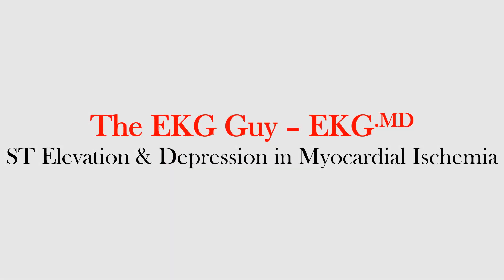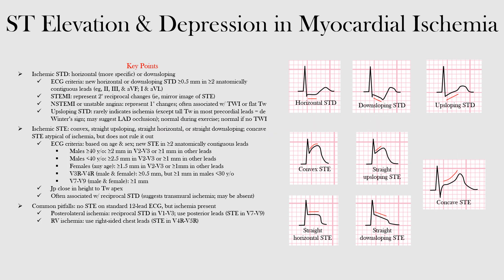In this lecture we will discuss ST elevation and depression in myocardial ischemia, including various ST segment morphologies, EKG criteria, and common pitfalls. ST depression caused by myocardial ischemia can have a characteristic morphology. It is characterized by either horizontal or downsloping ST depression. The horizontal ST depression is considered more specific than the downsloping ST depression.